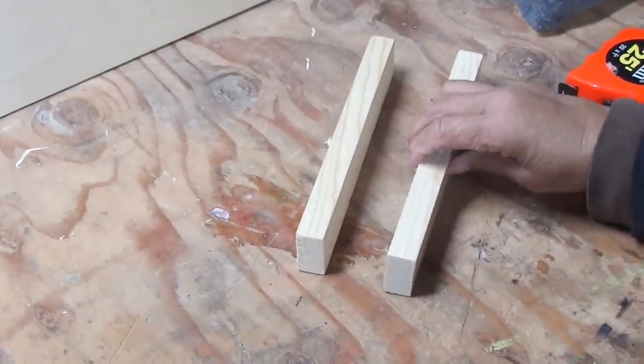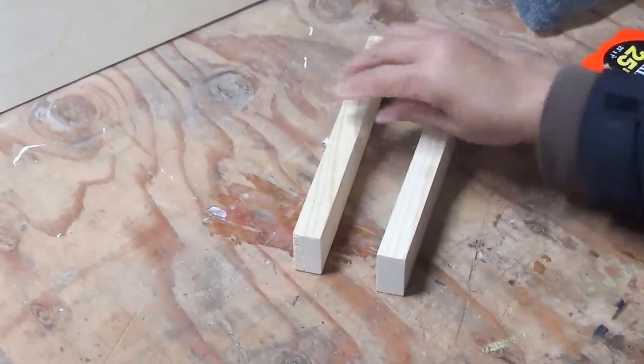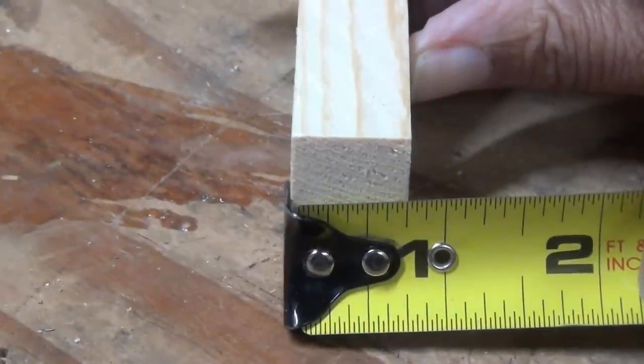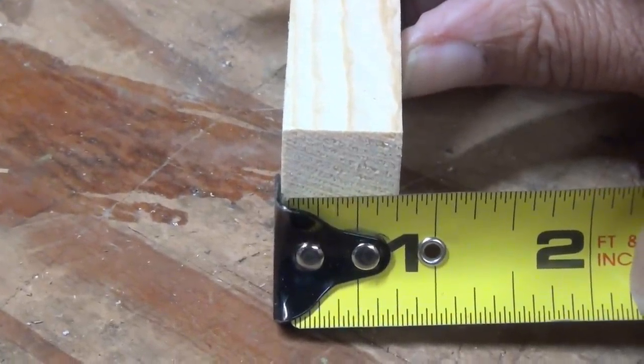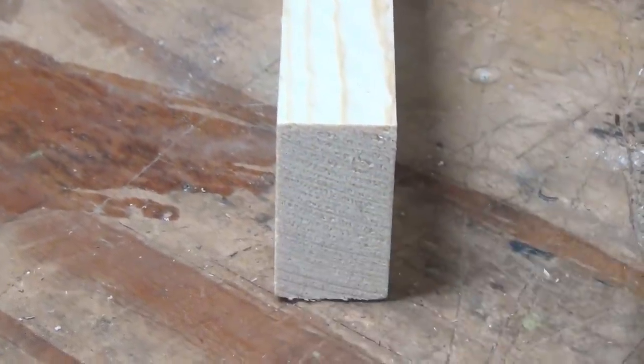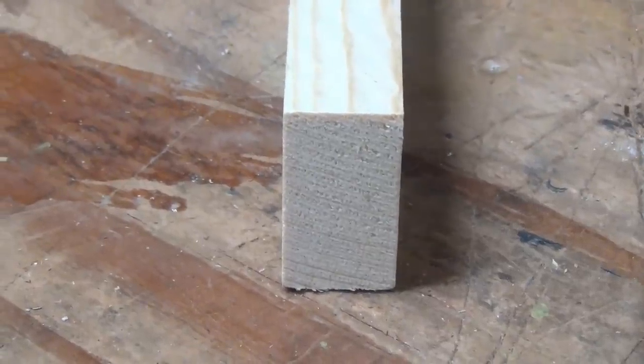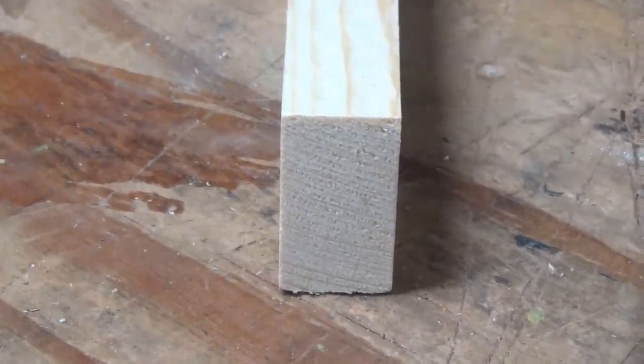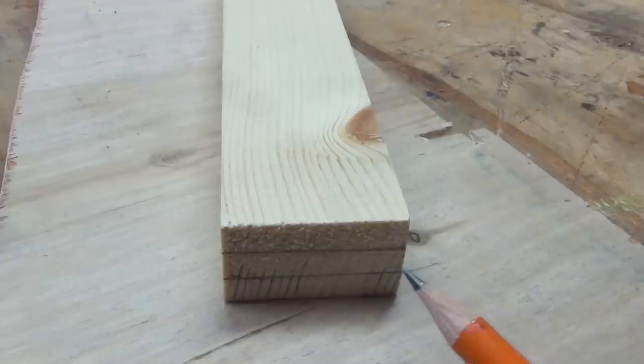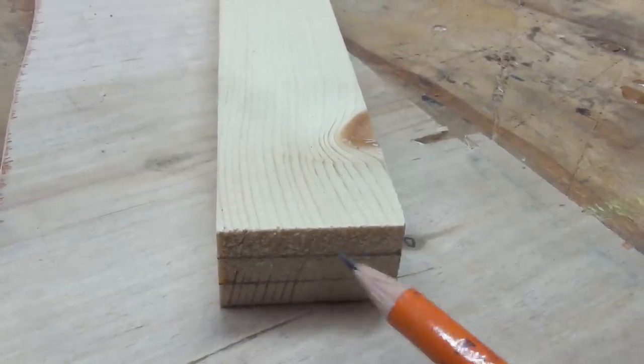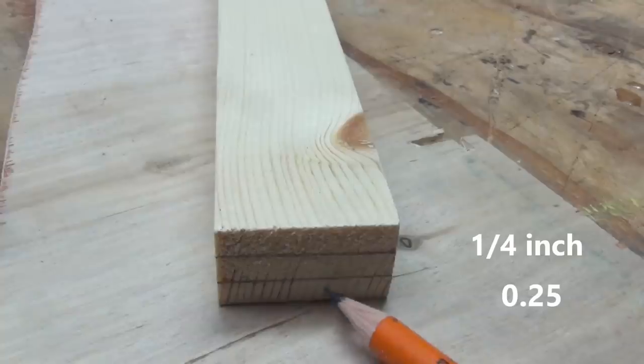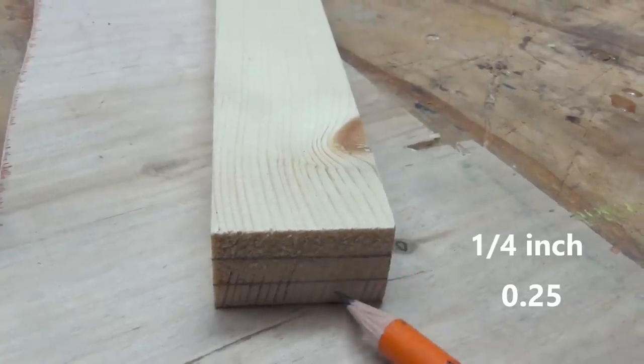So here are our two pieces of stock, this is what we're going to create our joint with. It's three quarters of an inch so we have to keep that in mind because we're going to slice it in three. We're going to slice it in three sections. Now what you want to do with your wood is you want to divide it into thirds, three slices.